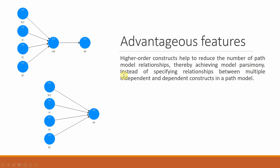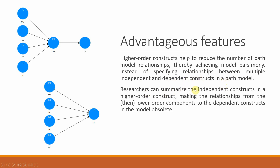Model parsimony is a hallmark of scientific research. Instead of specifying relationships between multiple independent and dependent constructs, researchers can summarize the independent constructs in a higher order construct. So rather than linking each sub-dimension of CSR individually to organizational performance, we can have a more parsimonious model and just link CSR with organizational performance directly, making the individual lower-order-to-dependent relationships obsolete.